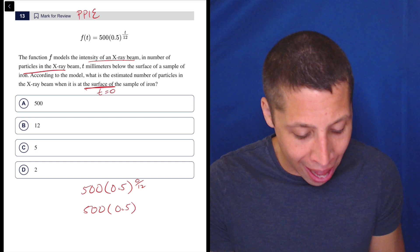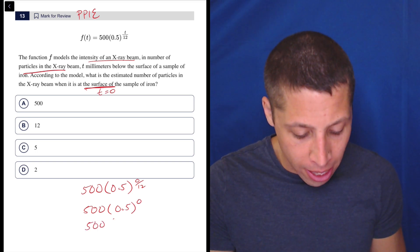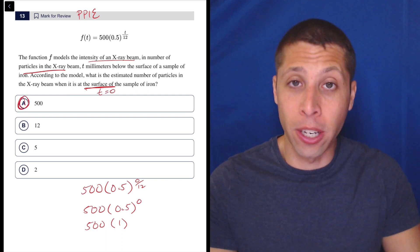You have to know that anything raised to the zero power is just 1. So 500 times 1 is 500, and that's the answer.